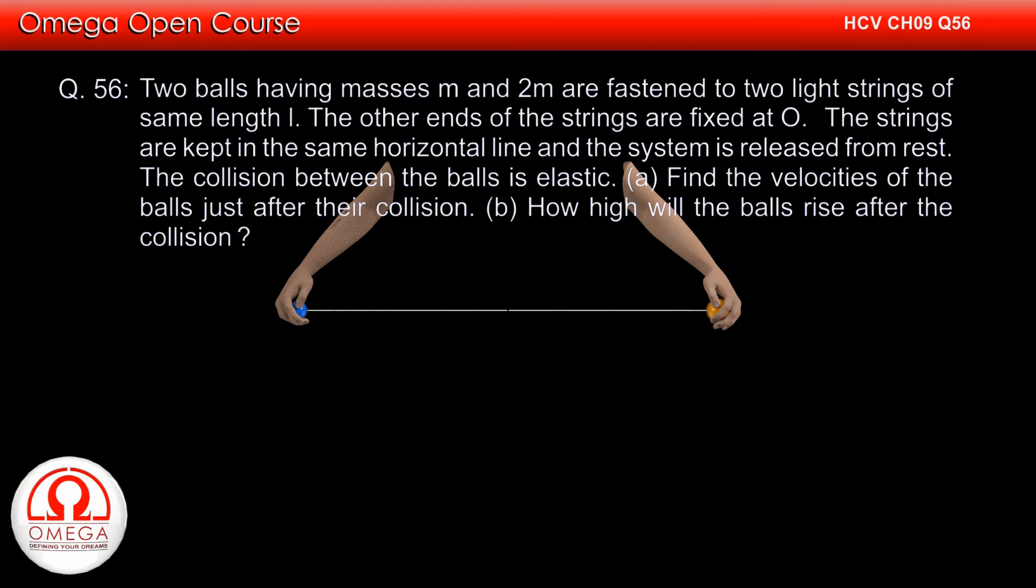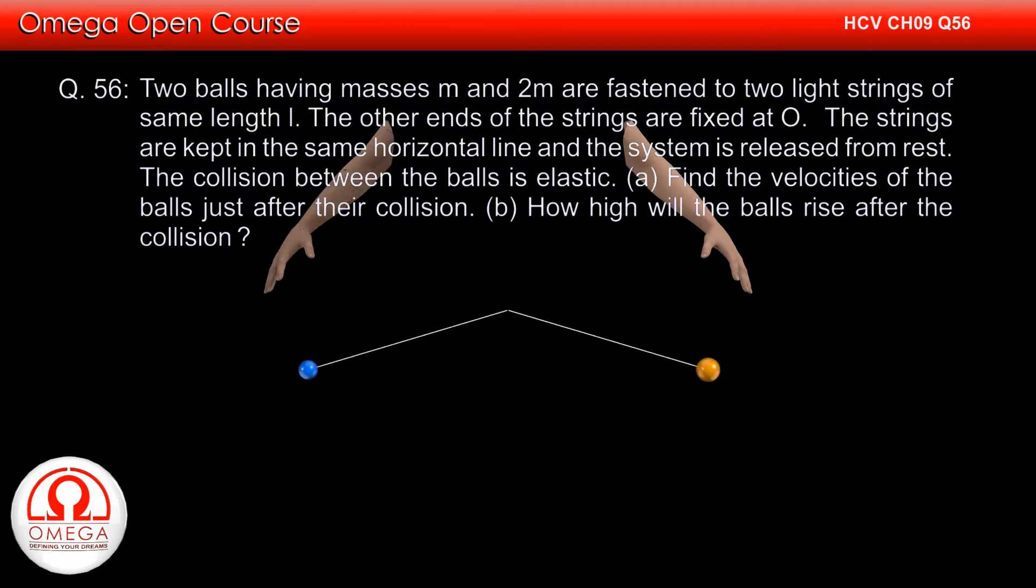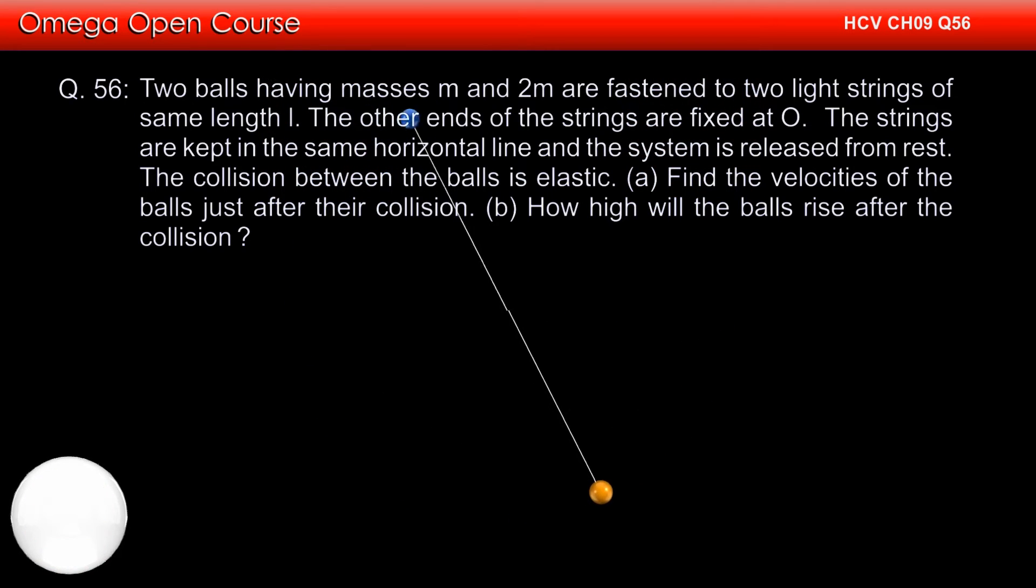Two balls having masses M and 2M are fastened to two light strings of same length L. The other ends of their strings are fixed. Their strings are kept in the same horizontal line and the system is released from rest. The collision between the balls is elastic.